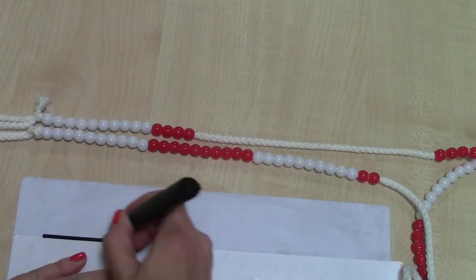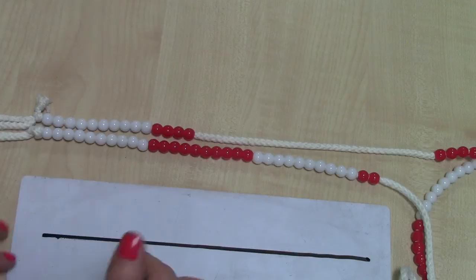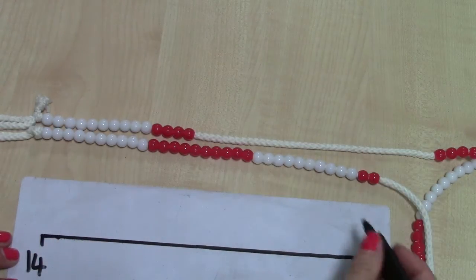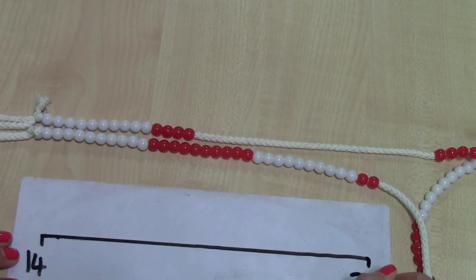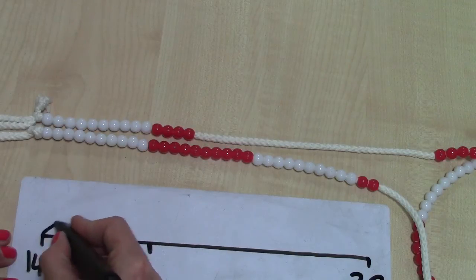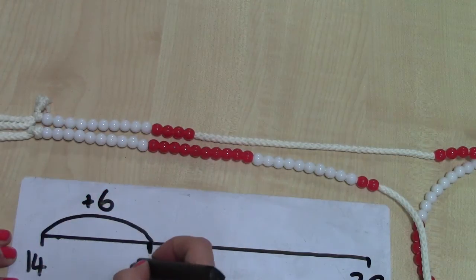Rather than starting from 0, which we don't need to do, we're going to start from our smallest number. We're going to start from 14 and we're going to count up to 32. So from 14, we're going to add 6 to get to 20.